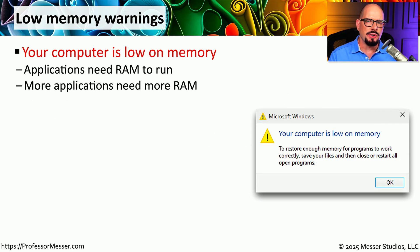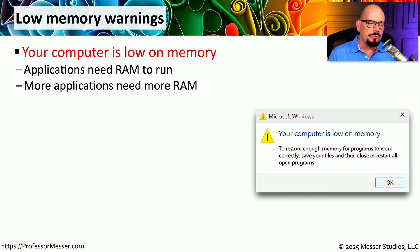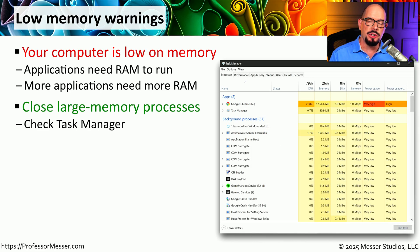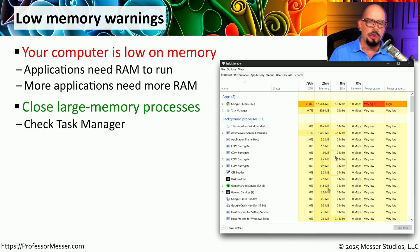All the work that happens on our computer happens inside of RAM, so we have to make sure we have plenty of memory available for applications to work. If we start running out of memory resources, we might get a message saying "your computer is low on memory — to restore enough memory for programs to work correctly, save your files and then close or restart all open programs." To know where to start, go to task manager and look at the memory column to see how much memory is being used by each individual application. You can sort this column by clicking on the top to bring the most resource-intensive processes to the top of the list.